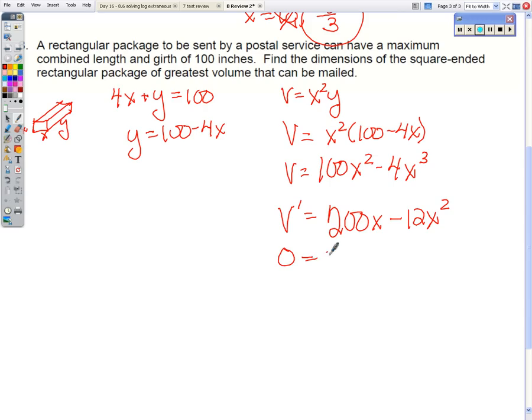Take the derivative because we want to maximize. Set it equal to 0. And we're going to solve. So I can factor out a 4x, and I'm left with 50 minus 3x. So x is either 0 or x is either 50 thirds.